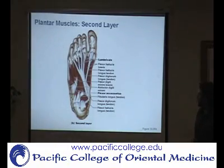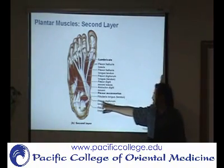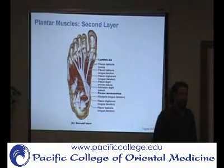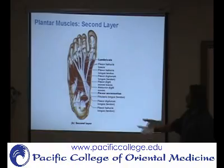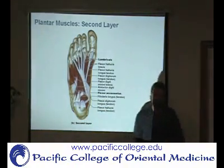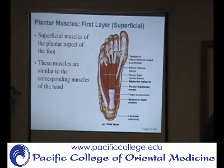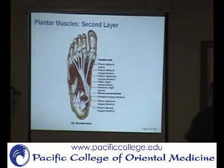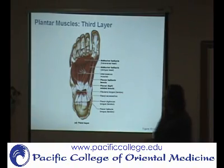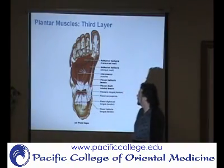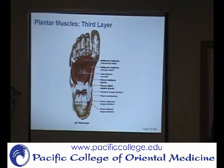Here are some of the deeper layers. These would be extrinsic muscles of the foot — for example, flexor digitorum longus comes up from the deep compartment of the calf, so that's extrinsic. Then these are intrinsic muscles. The intrinsic muscles of the foot are divided into a superficial layer, a second layer, and a third, even deeper layer. There are also interosseous muscles — same concept as in the hand — that move the toes side to side.